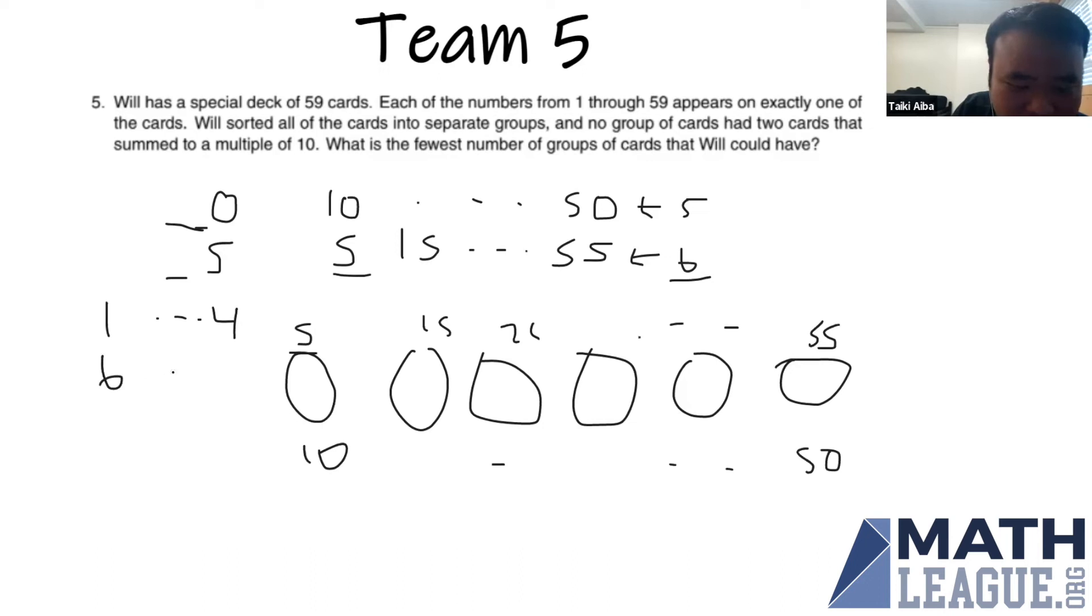And finally for all the numbers with units digits one, two, three, four, and six, seven, eight, nine, we can put the numbers with the units digit one through four in the same group because then no two of them should add to a multiple of 10.